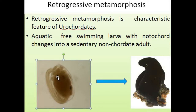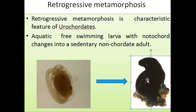This is the larva of the Ascidians; it has a tail. In the tail, you can see the notochord — it extends along the length of the tail. At the anterior end, it has sucker-like structures known as the adhesive papillae. This is the adult Ascidian. The identification mark of the adult Ascidian is the two siphons located at the anterior side: one is the buccal siphon and the other is the atrial siphon.